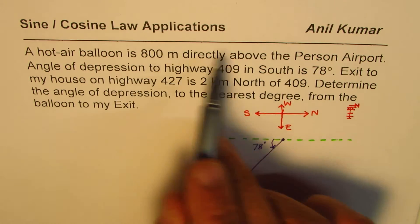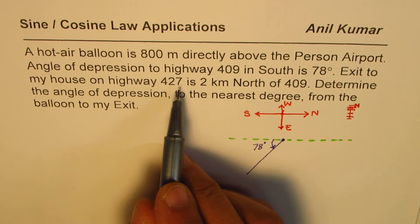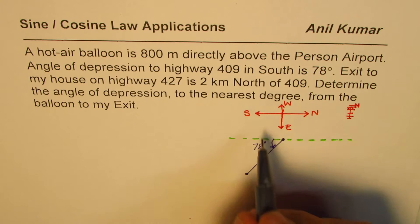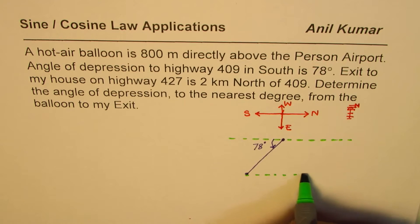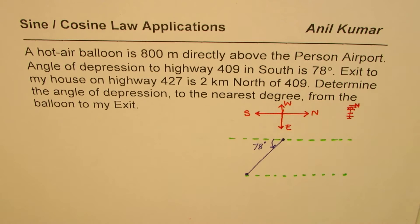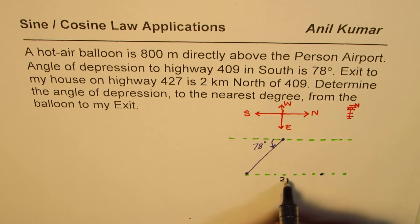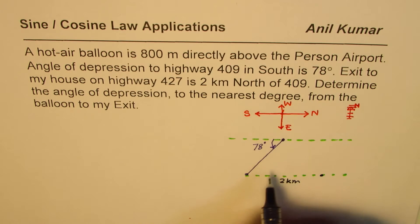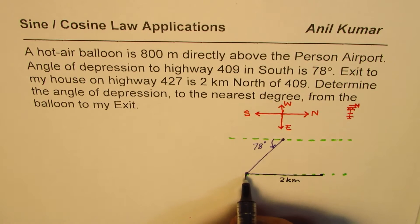These two highways are close to Pearson Airport in Toronto. The exit to my house on highway 427 is 2 kilometers north of 409. So basically, from the point which is on 409, 2 kilometers north — I draw another horizontal line parallel to the first, because we are moving in the north-south direction. North is towards the right for me. So this line represents 2 kilometers, and this point represents highway 409.